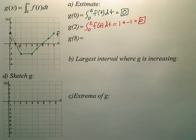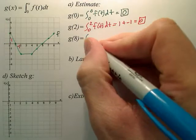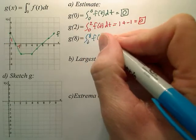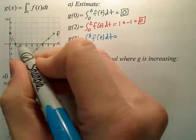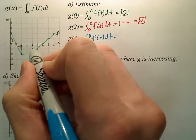And then the last one, g of 8, well that's the area from 0 to 8 of the function f of t. So I want the area of the whole thing, so let's see. Let's do this area better.